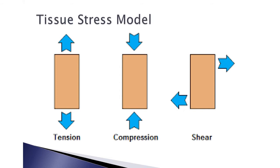Now we're going to talk about the tissue stress model or tissue stress theory in writing orthotic prescriptions. The idea is to determine which forces are acting on the foot or on other parts of the body, and then determine what we're going to do in an orthotic device to try and reverse those damaging forces. There are really only three types of forces that we need to worry about: tension, compression or pressure, and shear or friction.